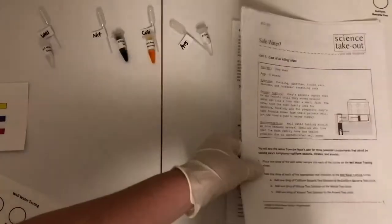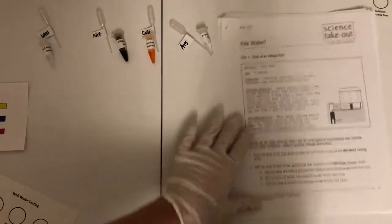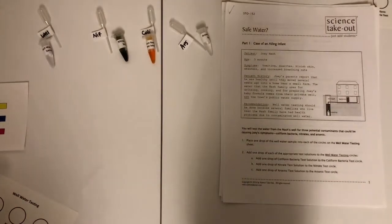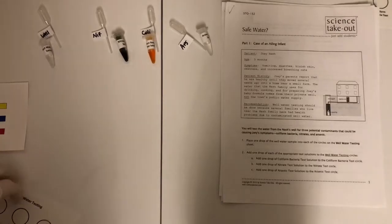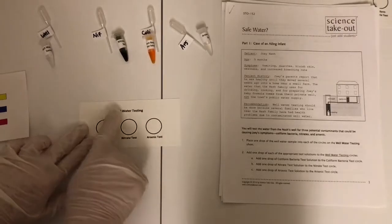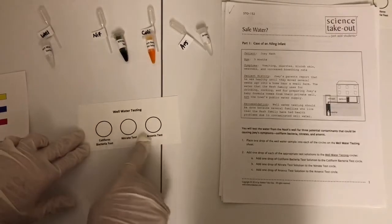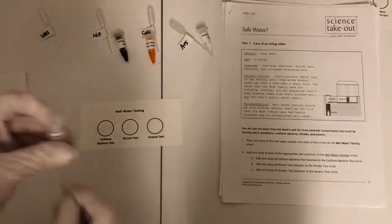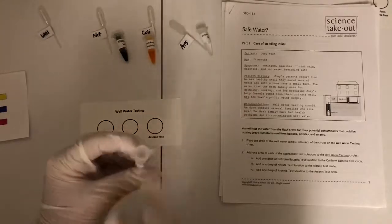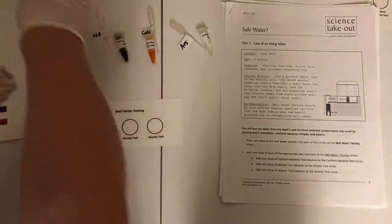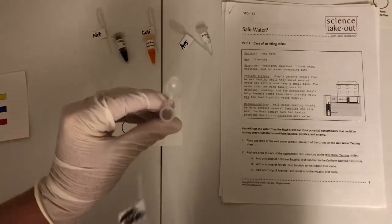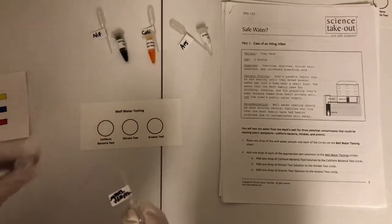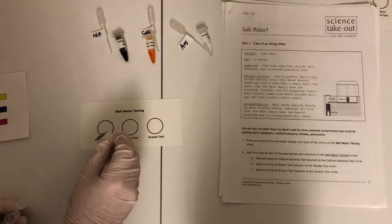So for the first direction, we're just going to follow these directions here. Your first direction says place one drop of well water onto each of the well water testing circles here. So I'm going to come in here and get my well water sample and I'm going to use my well water pipette here and I'm going to pipette out one drop.